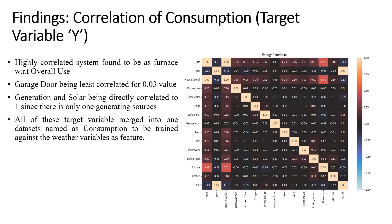So one of the first findings we did for this project is developing the correlation dependencies of the target variable y. As you can see in the figure we have created a heat map that shows the correlation between the consumption parameters. We can see that the highly correlated system is found to be furnace which is pointing to the value of 0.51 with respect to the consumption parameter. And the garage door is the least correlated value pointing at 0.03. So generation and solar variables are directly correlated to one since there is only one generating source. So all of these target variables are merged into one data set named as consumption which shall be trained against the weather variable as a feature input variable.